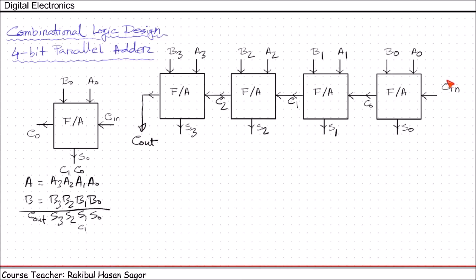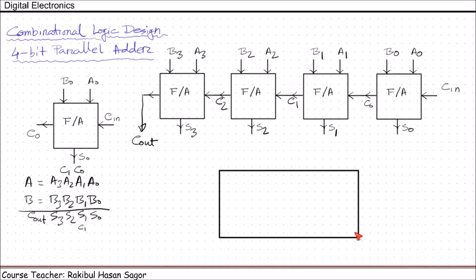This is the design of the 4-bit full adder. The 4-bit full adder circuit has inputs A0, A1, A2, A3 and B0, B1, B2, B3, one carry in, and outputs S0, S1, S2, S3 with a final carry out.